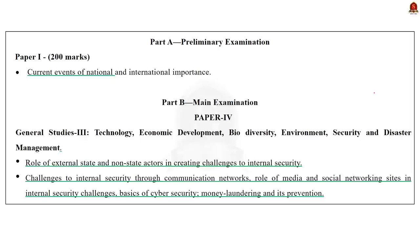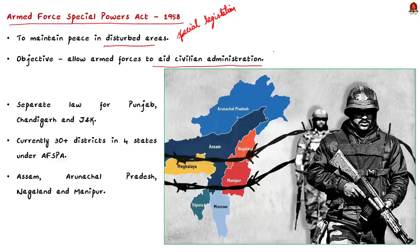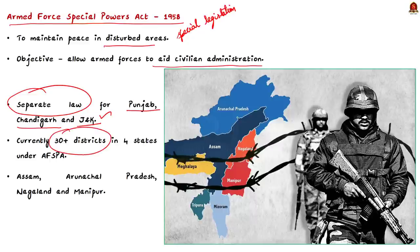The syllabus relevant to this topic is given here for your reference. Armed Forces Special Powers Act 1958 was a special legislation created to maintain peace in the disturbed areas. The objective was to allow armed forces to aid the civilian administration in peace-disturbed areas. Since its enactment, the act was made applicable not only to the northeastern states and Jammu and Kashmir, but also to Punjab and Chandigarh. Note that Jammu and Kashmir, Punjab and Chandigarh had separate Armed Forces Special Power Acts. Currently, AFSPA is in force in 30+ districts across 4 states: Assam, Arunachal Pradesh, Nagaland, and Manipur.